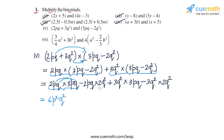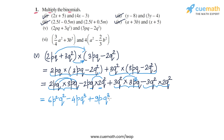Then plus 3Q squared into 3Pq: 3 times 3 is 9, one P, and Q squared times Q gives Q cubed, so 9Pq cubed. Finally minus 3Q squared into 2Q squared: minus 3 times 2 is minus 6, and Q squared times Q squared is Q to the power 4, giving minus 6Q to the power 4.